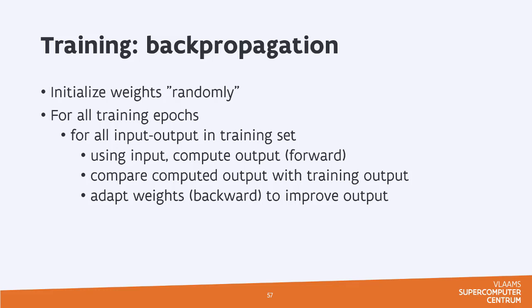And we will adapt the weights in a backward sense to improve the output, so that in the next iteration, the computed output should be closer to the training output. And this we keep on doing for a number of training epochs. After each training epoch, we check the accuracy. And if that is good enough, if it has reached a certain threshold which we consider acceptable, we just stop the algorithm and we've got our trained network.